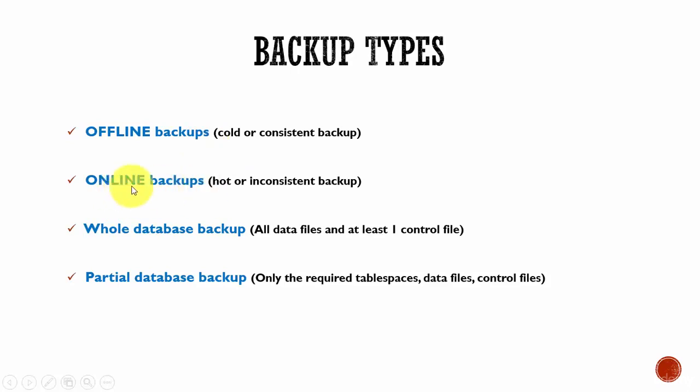The next type is online backups or hot backups. They are called online backups or hot backups because while we are taking the backup, the database is still up and running — the database is open and all the users on the database are performing various transactions. That is why it is called hot or online.